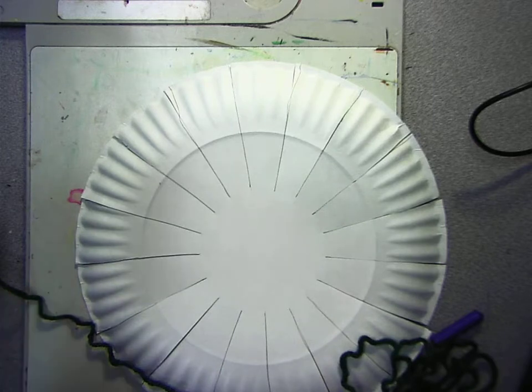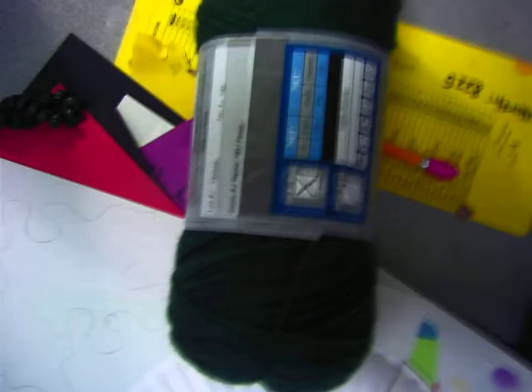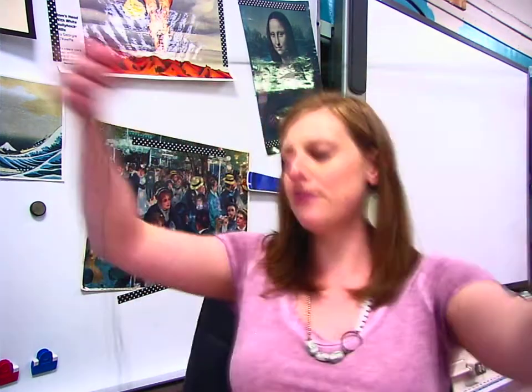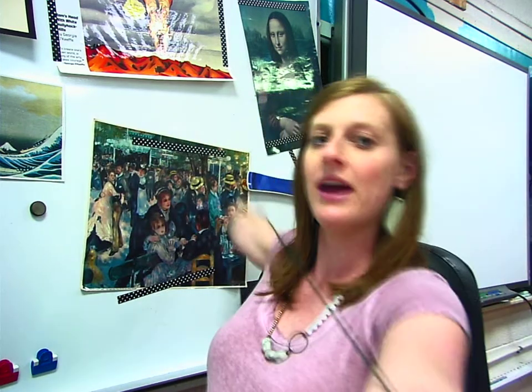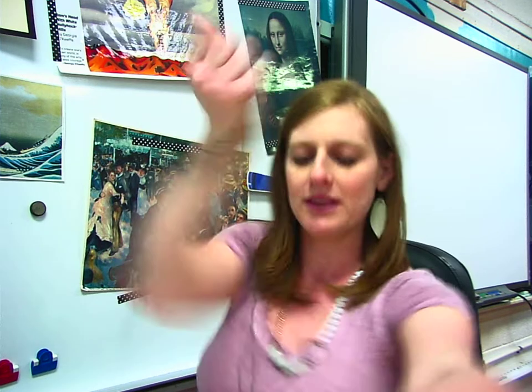Remember, an arms length—I'll show you really fast—is from one set of fingertips all the way to the other. Do you see how my arms are stretched out? I don't have it like this. Sometimes I have boys and girls that are like this. No, stretch it all the way out. That's one arms length. Then you're going to do another arms length. Once you have your two arms lengths, this is how we're going to start.